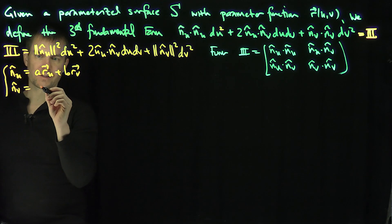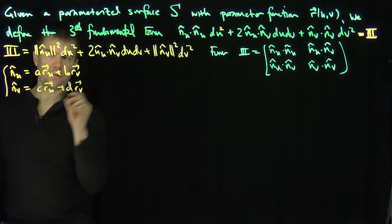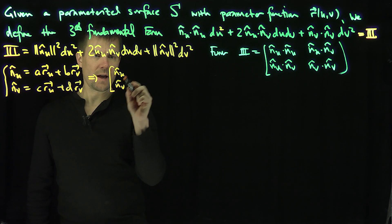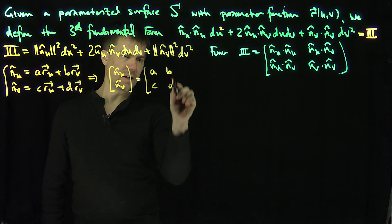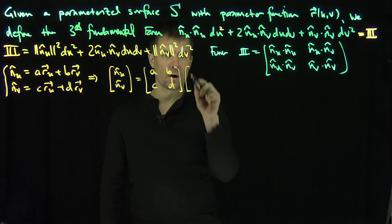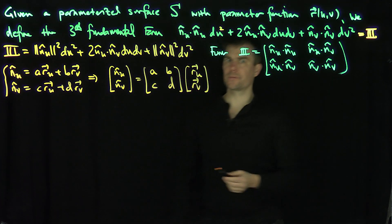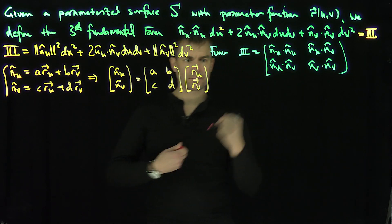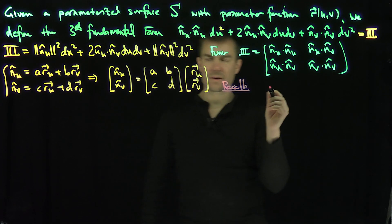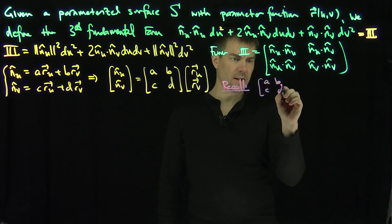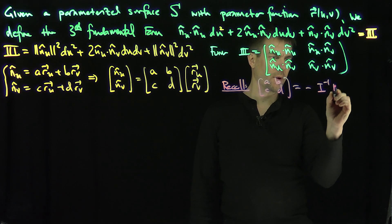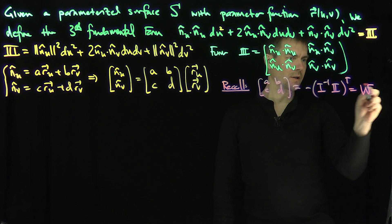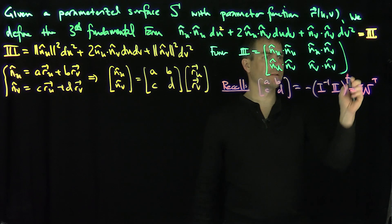Similarly, N_V hat is going to be C·R_U plus D·R_V. Writing this in matrix form, the vector [N_U hat, N_V hat] equals the matrix [A, B; C, D] applied to the vector [R_U, R_V]. The Weingarten theorem tells us that this matrix [A, B; C, D] is the negative of I inverse times II, transposed. This is going to be W transpose — the Weingarten matrix.